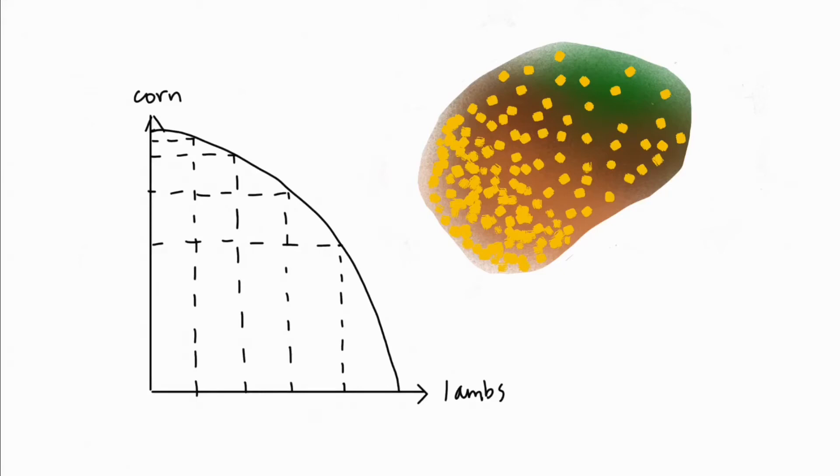Let's pretend we're in an economy with two goods, corn and lambs. There is a fixed amount of resources shown by the one piece of land which would be used to either grow corn or graze lambs.